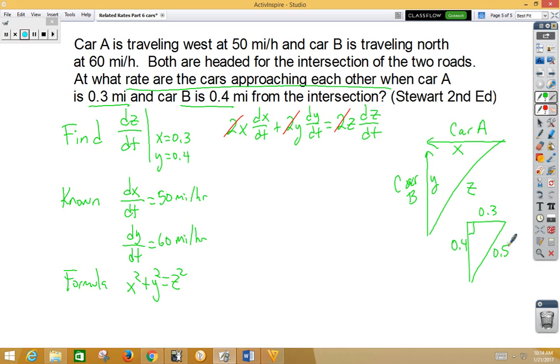So we can plug in: 0.3 times dx/dt, which was 50, plus 0.4 times dy/dt, which was 60, equals 0.5 dz/dt. If we multiply, we get 15 plus 24 equals 0.5 dz/dt.